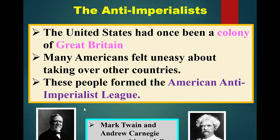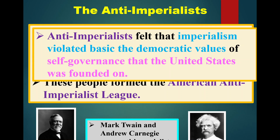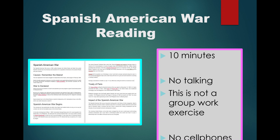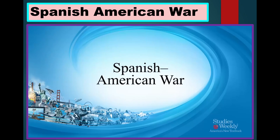There were some people who were against imperialism in the United States. Two such notable figures are Mark Twain and Andrew Carnegie. Anti-imperialists recognized that the United States had once been a colony, and they saw the moral problems with being an imperialist nation. Anti-imperialists felt that imperialism violates the basic democratic values of self-governance that the United States had been founded on, and they pushed against these ideas.